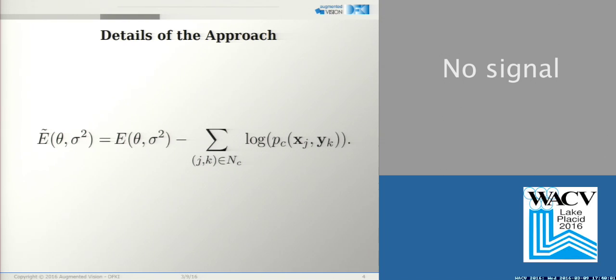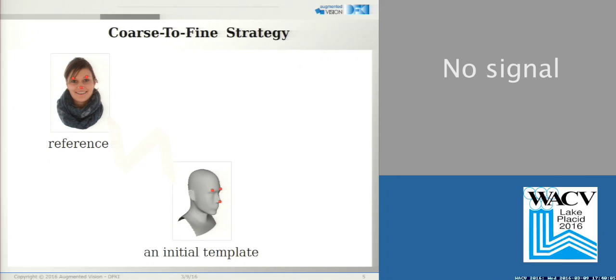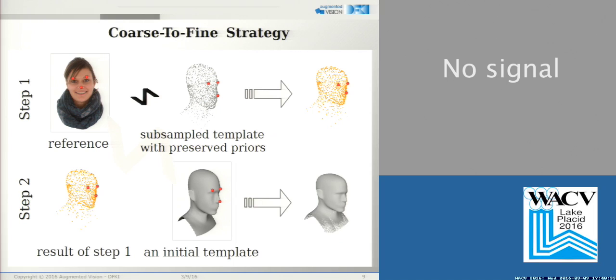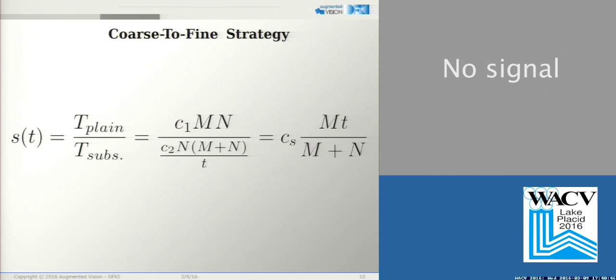So this is our first main contribution in the paper. Our second contribution is a novel coarse-to-fine strategy. Suppose we want to register a template and a reference. Note that the point clouds are shown as a mesh for visualization purposes. Instead of doing this directly, we first register the scan with the subsampled template where correspondences are preserved. And then in step 2, we register the result of step 1 as a reference with the initial template. We obtain the result, which is an approximation for our initial problem. And we are able to achieve linear speedup in T, where T is the template subsampling factor.